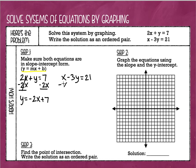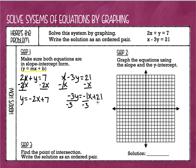To solve x minus 3y equals 21 for y, I'm going to subtract x from each side. That negative sign sticks with my 3y, so I have negative 3y equals negative 1x plus 21. Then I divide everything by negative 3, giving me y equals one-third x minus 7.